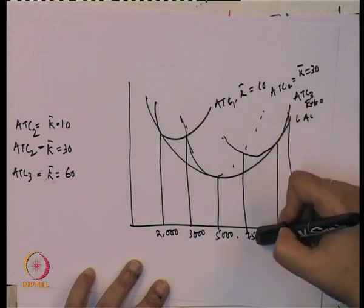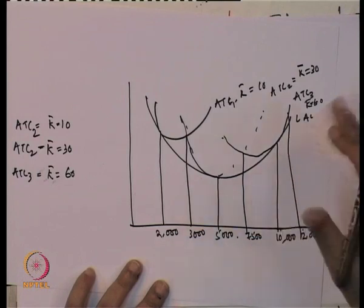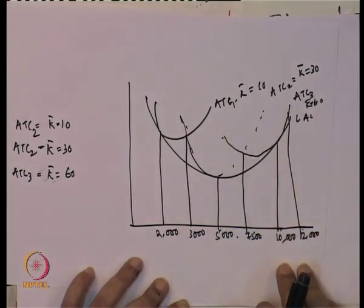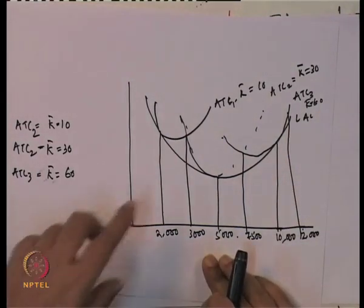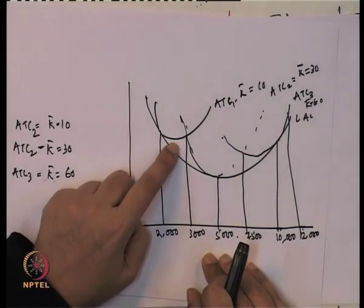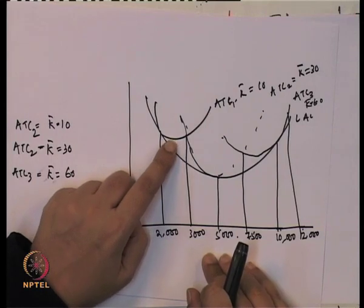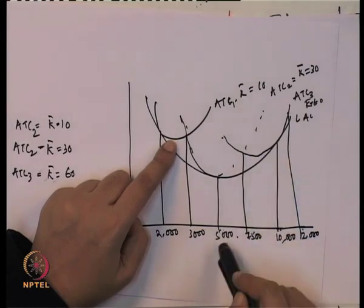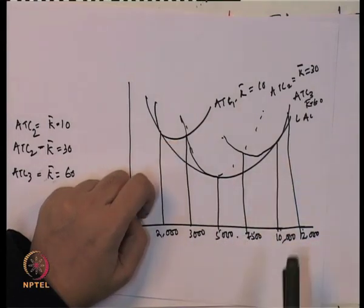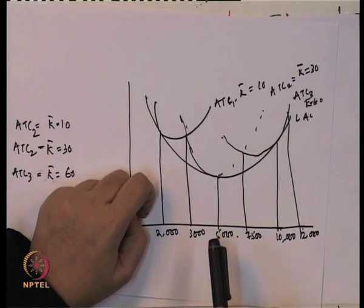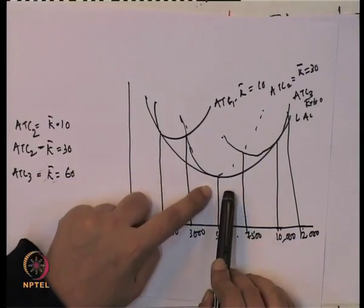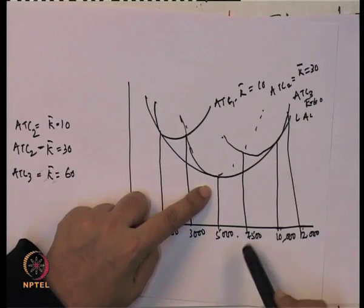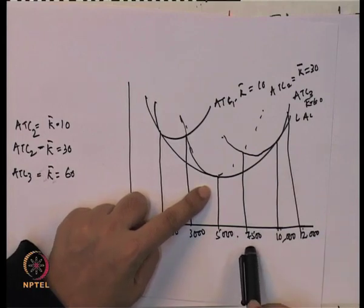If the firm still wants to expand, it is always better to operate at the decreasing portion of the cost curve. So at 3000 units, it is desirable to operate at a higher capital input mix because that allows expansion up to 7500 units. If the firm is no longer interested in expanding, it is preferable to operate at ATC1 where K equals 10, since capital requirement is less. Similarly, 5000 units is the optimal output level because it is produced at minimum cost.